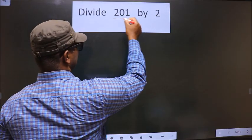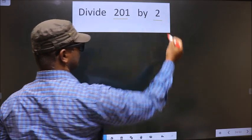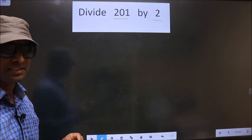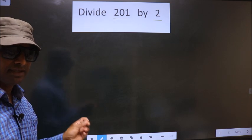Divide 201 by 2. While doing this division, many do the mistake. What is the mistake? I will tell.